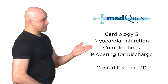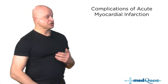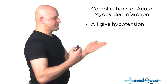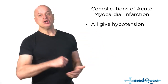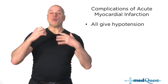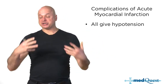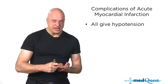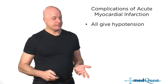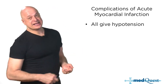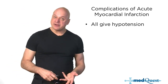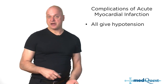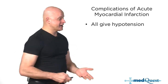The complications of myocardial infarction all give you hypotension — whether it's a wall that is rupturing, weakening, or an arrhythmia, they all give you low blood pressure. Anything that can give you low blood pressure can make you confused if you're not perfusing your brain.